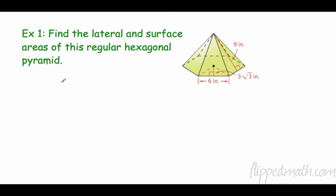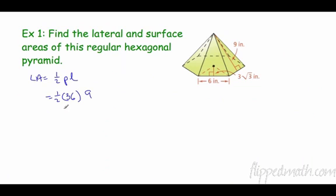Let's find the lateral area and surface area of this pyramid. Lateral area equals one-half times the perimeter times the slant height. The base has six sides each measuring 6, so the perimeter is 6 × 6 = 36. The slant height is 9. So one-half times 36 times 9 gives us 162 inches squared.